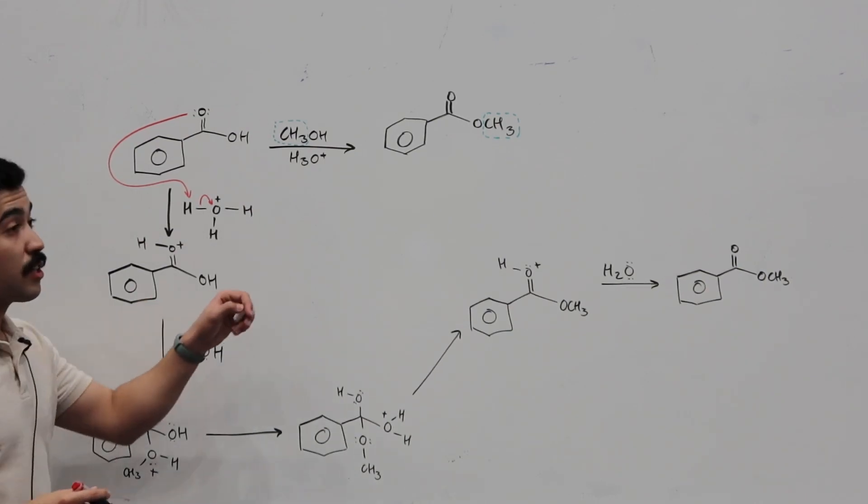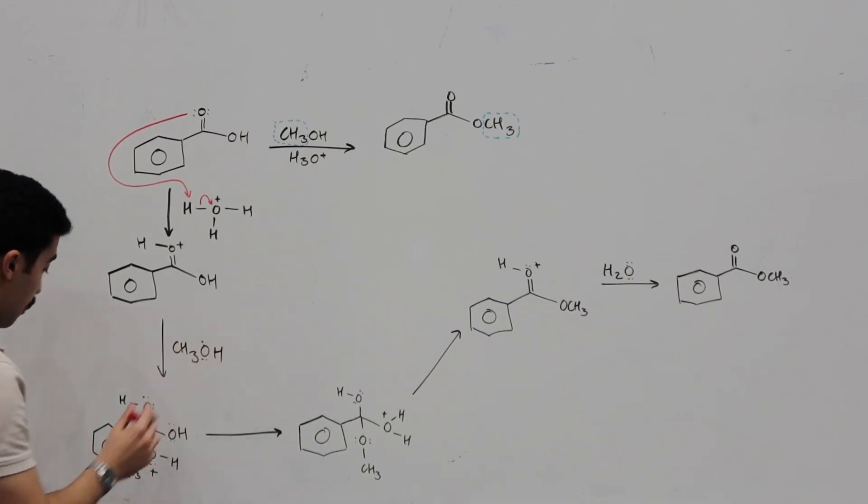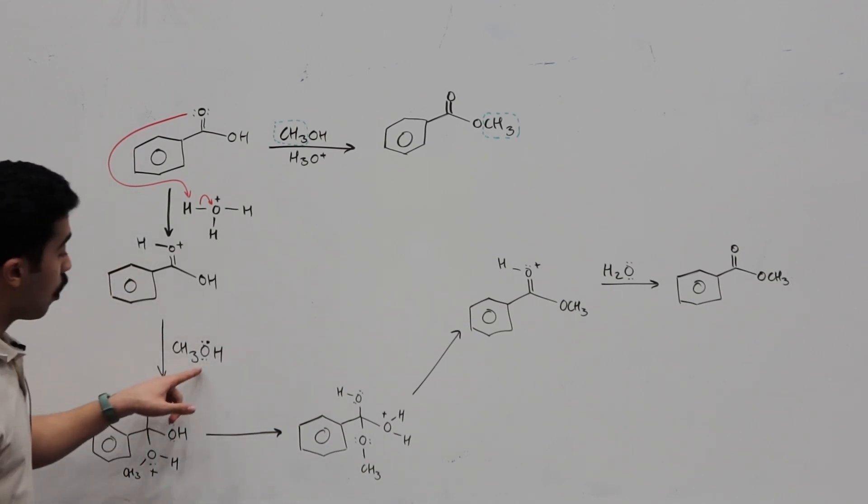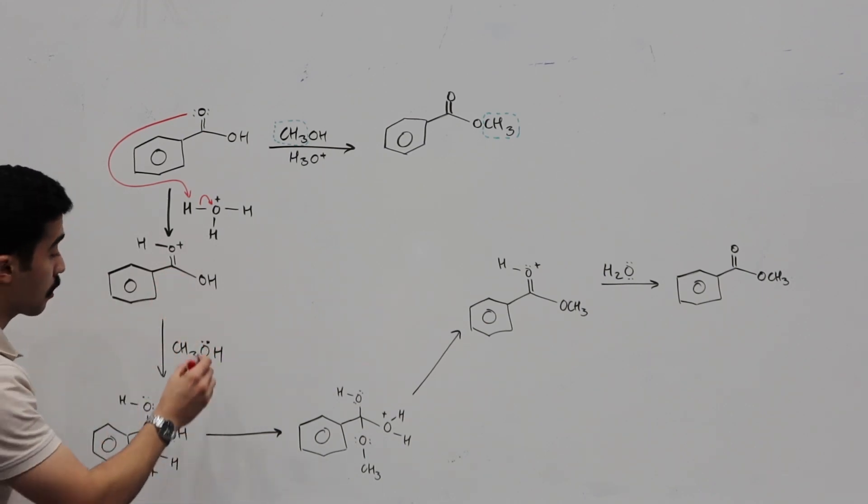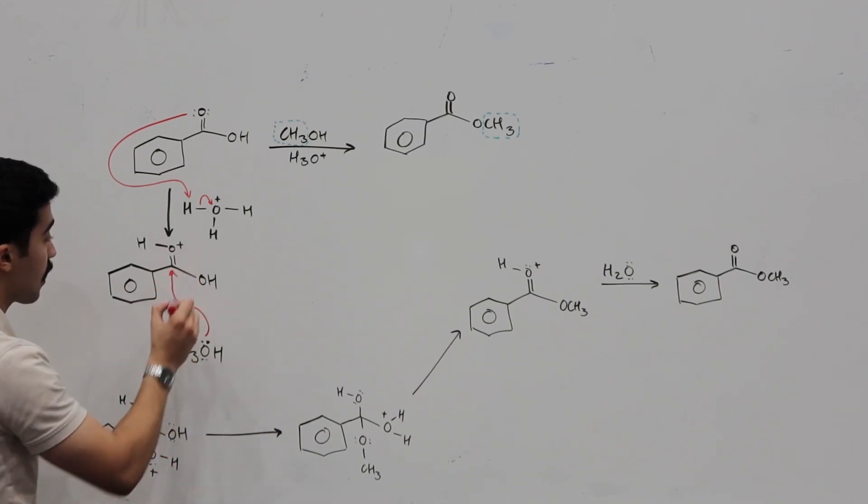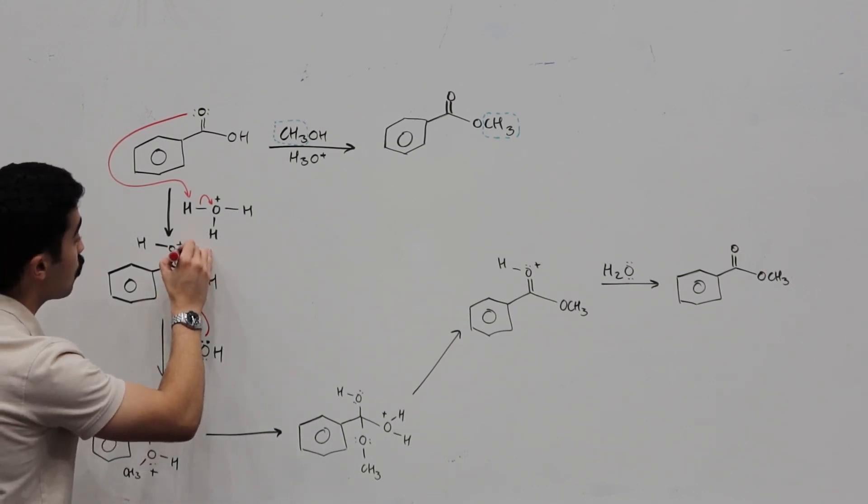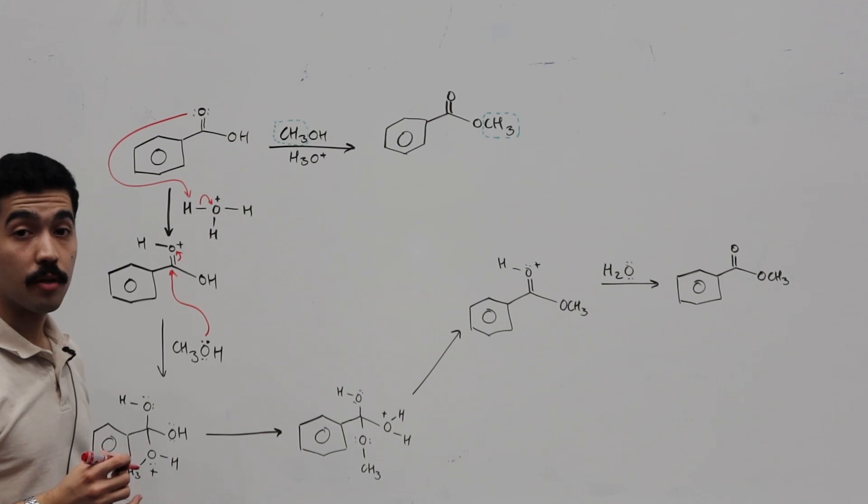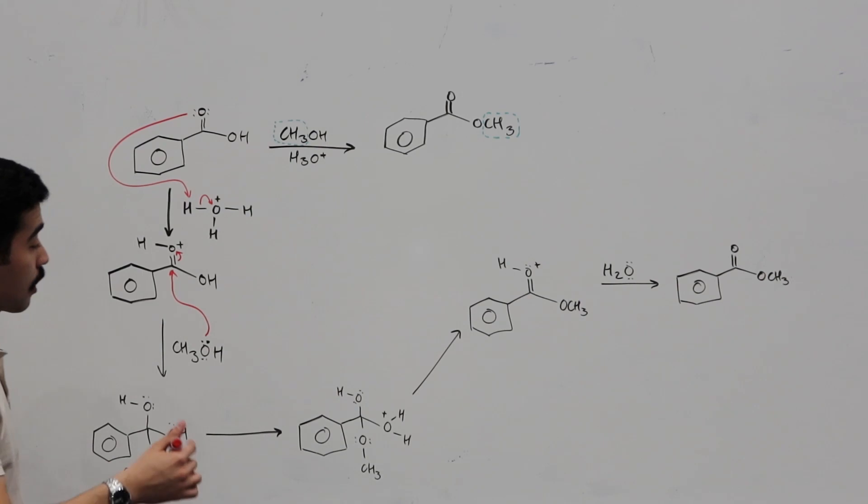Now, the next step is our methanol, or our R'OH, will now come in. The lone pairs on the OH will now go ahead and attack this carbonyl, because it is susceptible to attack. When we do that, what's going to happen is we're going to have to break the double bond, because carbon can only have four bonds. If we were to build this bond, it would have five, and we can't have that in organic chemistry.